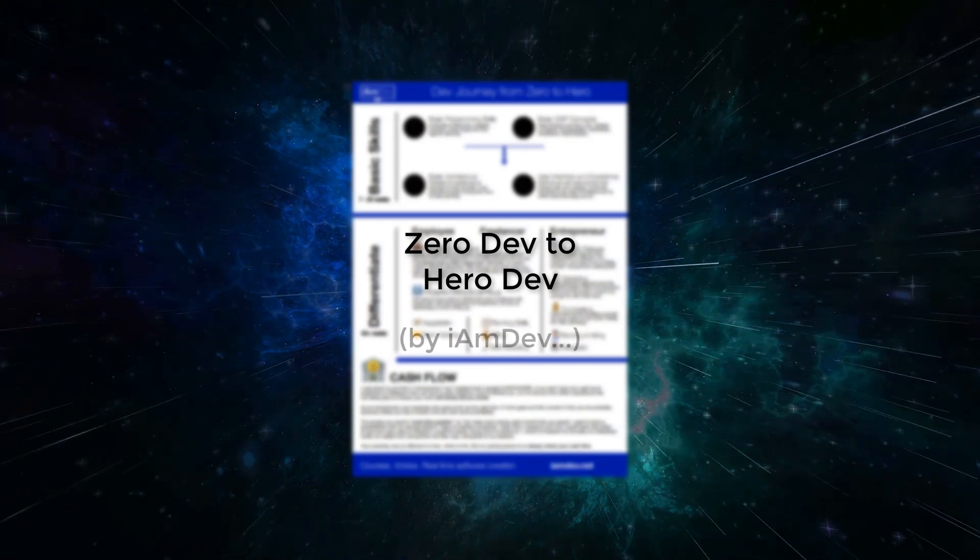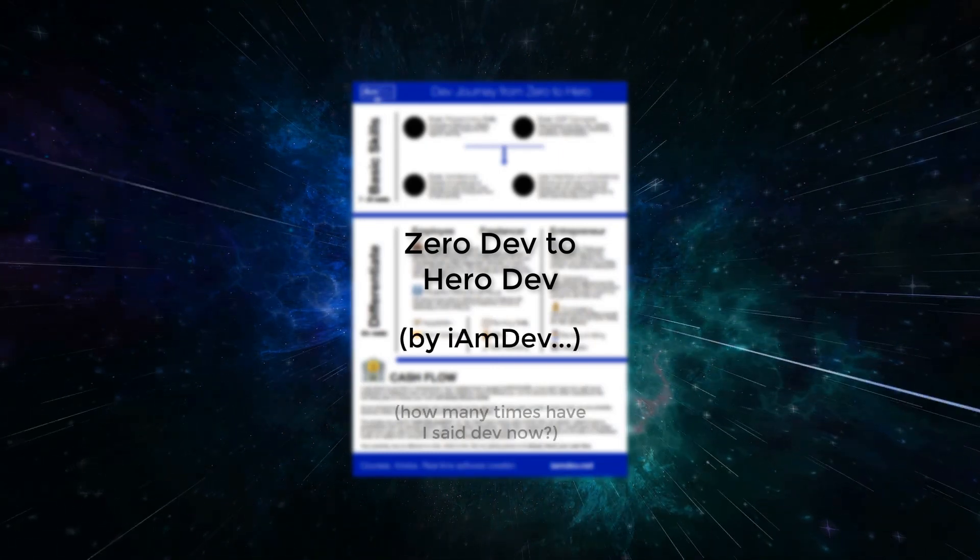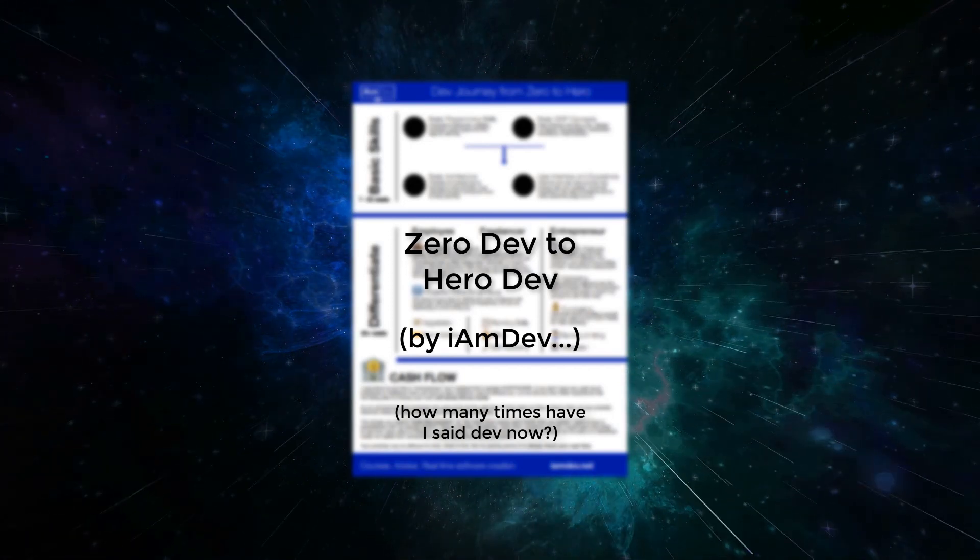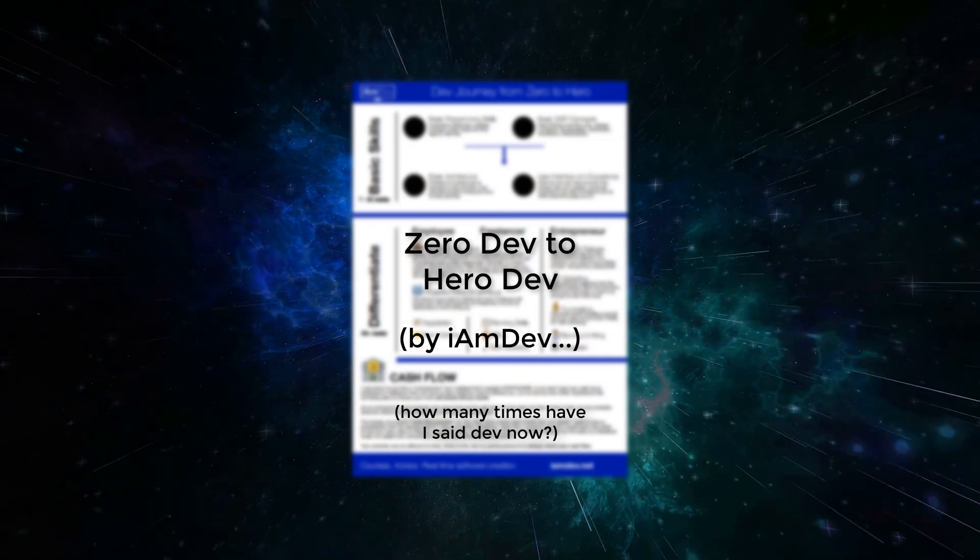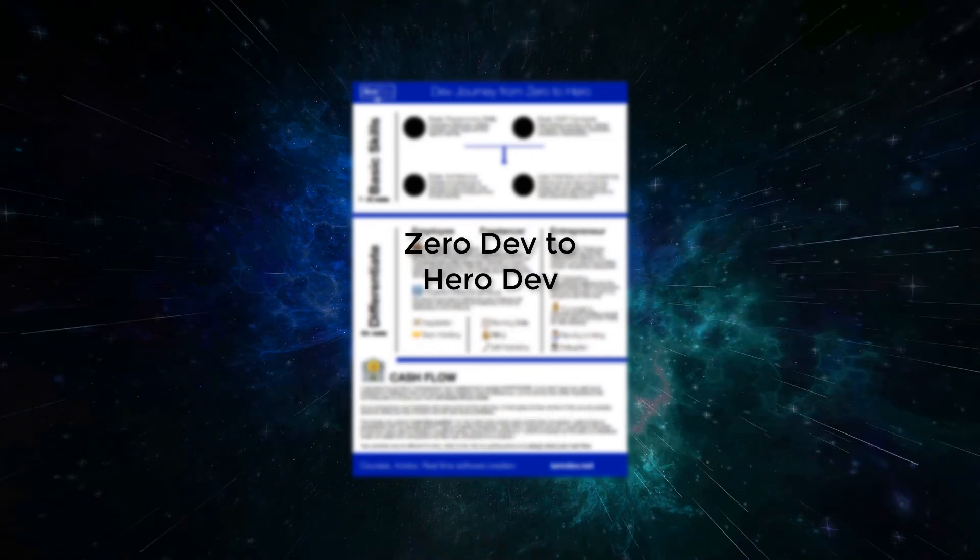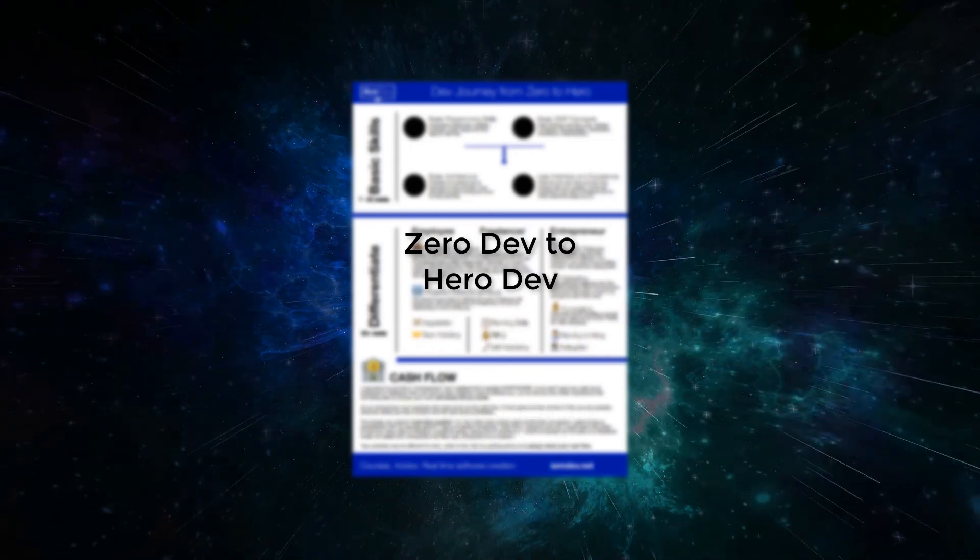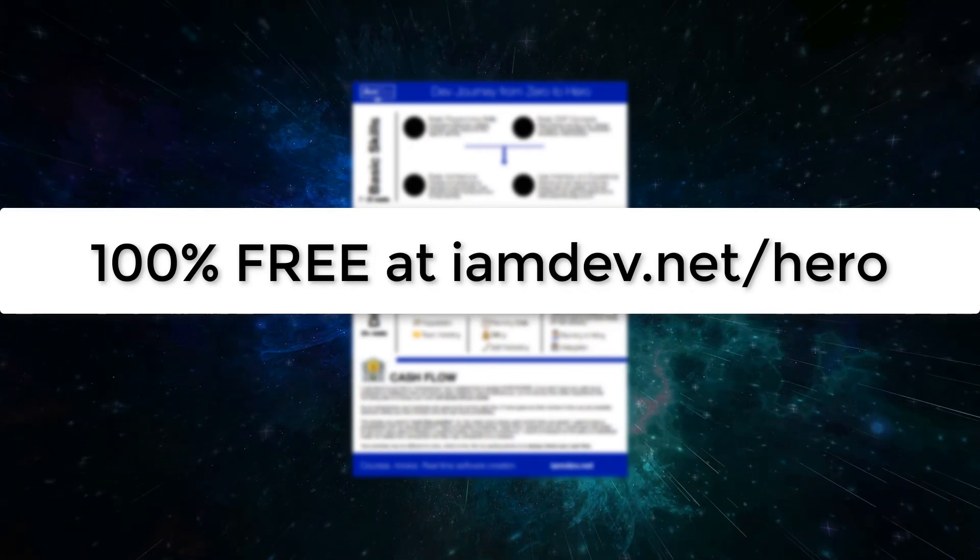It outlines top-level skills you need to become an employee, freelancer, entrepreneur, or any mixture of the three. If you want a map to success, this guide is what you're looking for. Get it for free at iamdev.net/hero.